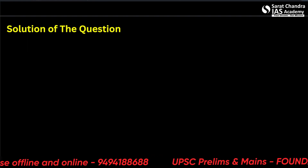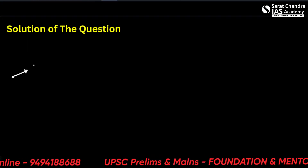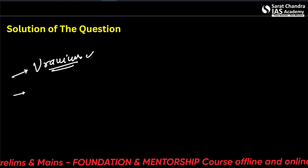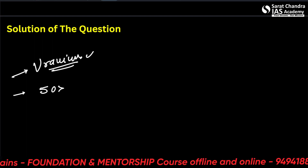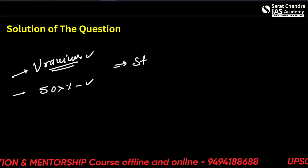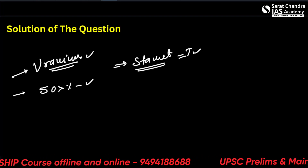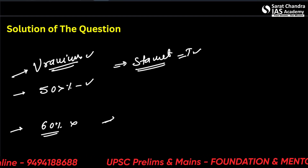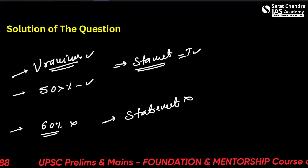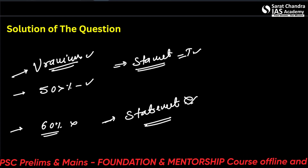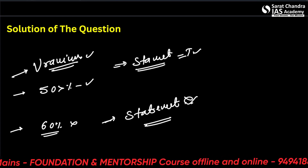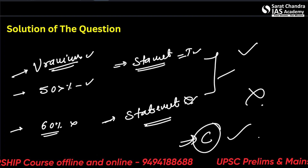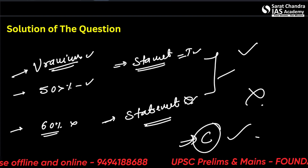Now let us evaluate the question statements. Statement 1 — India, despite having uranium reserves, generates more than 50% of its electricity from coal — is correct. Statement 2 — that 60% uranium enrichment is required for electricity production — is incorrect, since only 3–5% enrichment is used for electricity. Therefore, Statement 1 is correct and Statement 2 is incorrect, giving us answer C.